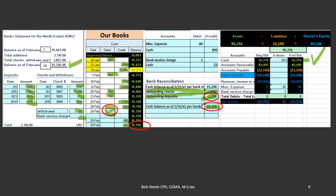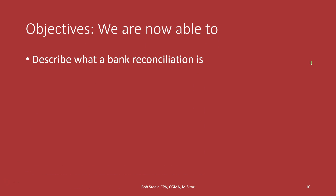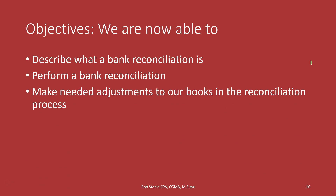We can see that the reconciliation ties out to the general ledger and to our ending balance on the trial balance. We are now able to describe what a bank reconciliation is, perform a bank reconciliation, make needed adjustments to our books in the reconciliation process, and record those adjustments.